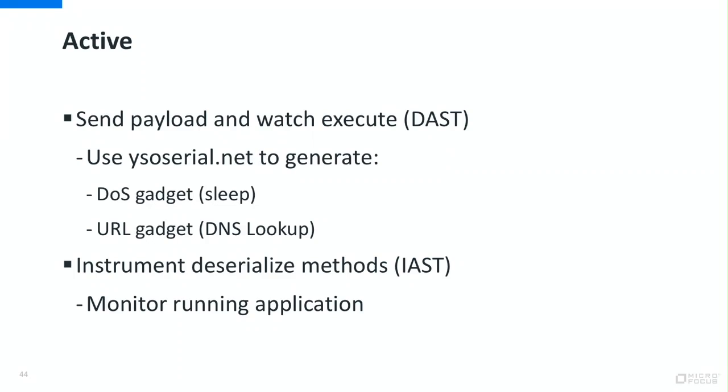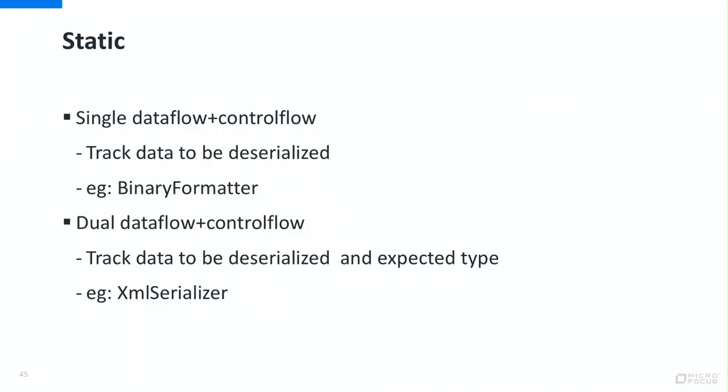IAST is another approach — you instrument your virtual machines, monitor what is going on inside, and if untrusted data gets into serialization methods, you report that. That's good for pre-production but not production. If you have access to source code, that's probably the easiest approach: check if untrusted data flows into one of these serialization sinks. For some formatters like binary formatter it's simple; for others like XML serializer, you have to correlate different data flows and take control flow into account because there can be a serialization binder. Most static analysis tools can do this — if you use Fortify, I know it works because I wrote the support for it.